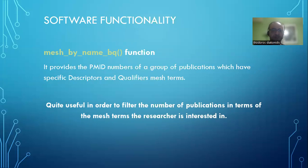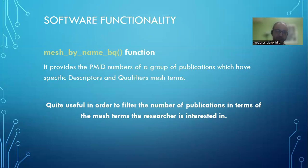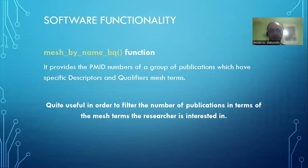Another function is mess by name, which is more specific and relates to the name of the MeSH term. There are two parts to a MeSH term: the descriptor and the qualifier. You define the exact name of the descriptor and qualifier that you want your publications to include, and the program filters all the entered publications down to those that contain those specific descriptors and qualifiers.